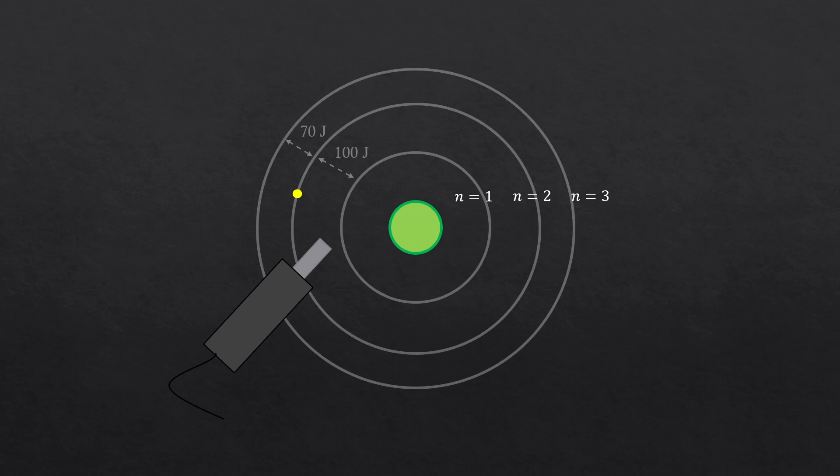This is happening all because electrons prefer to absorb only certain amounts of energies for transitions. Electrons are forbidden to be somewhere in the middle no matter what. Somewhere in the middle, I mean the places between the orbits.